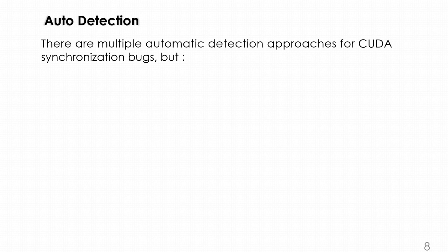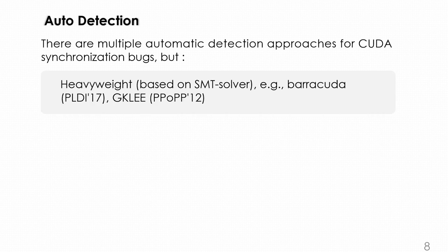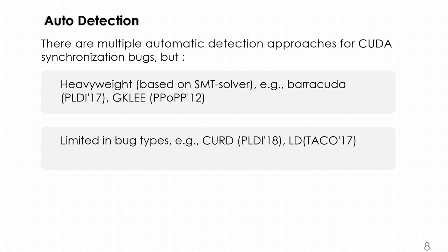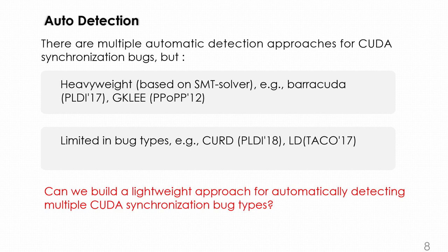There are multiple automatic detection approaches for CUDA synchronization bugs, but they're heavyweight, for example based on SMT solver like Barracuda or GKLee, and limited in bug types like GKRACE that can only detect data race bugs. Can we build a lightweight approach for automatically detecting multiple CUDA synchronization bug types?